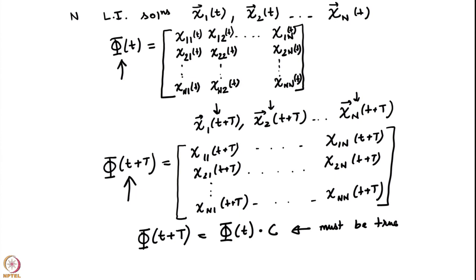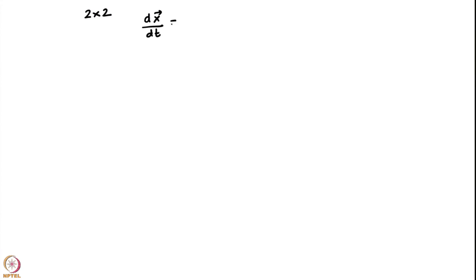Why should it be so? Let us take one simple example to understand, and you can immediately generalize. I will take a simple 2×2 example and then we can immediately generalize to the n×n case. So my system is 2×2: dx/dt = A(t)·x where A(t) is a 2×2 matrix. So there will be 2 linearly independent solutions to this system in general.